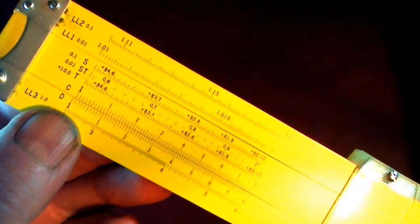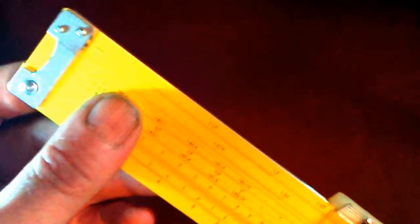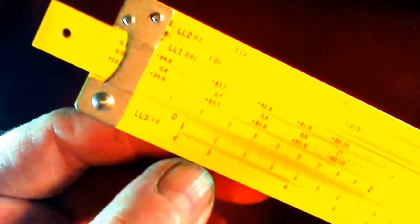First, find the C and D scale on your slide rule. Take the center bar and slide out until the 4 on the C scale lines up with the 2 on the D scale.